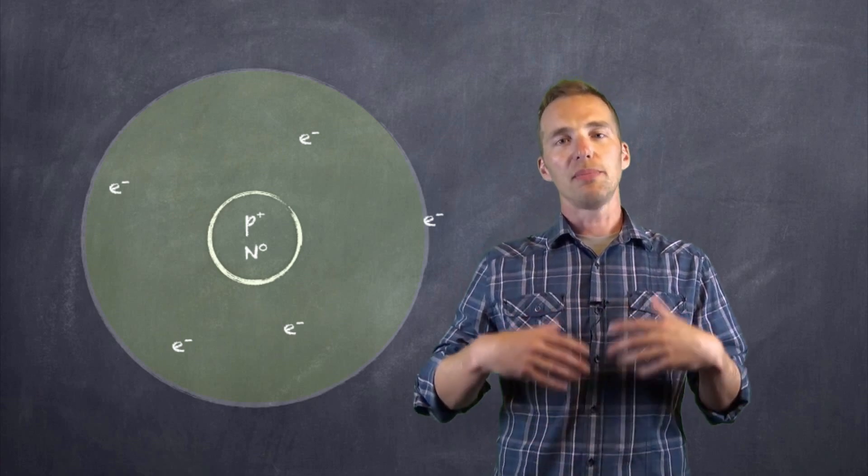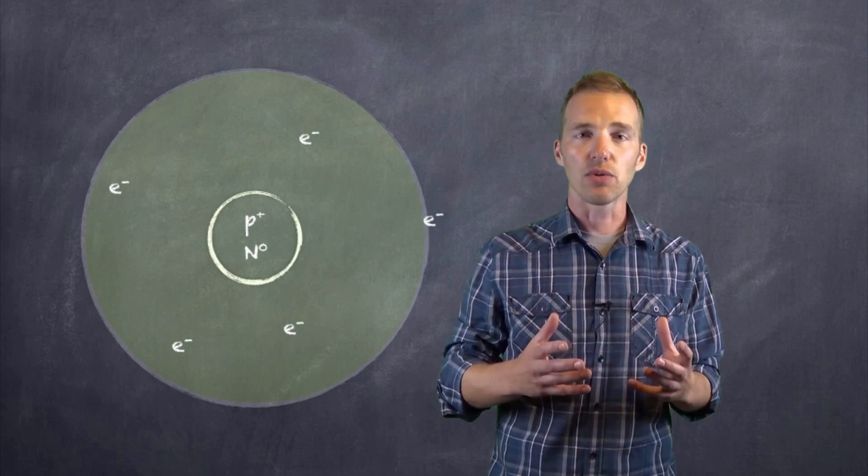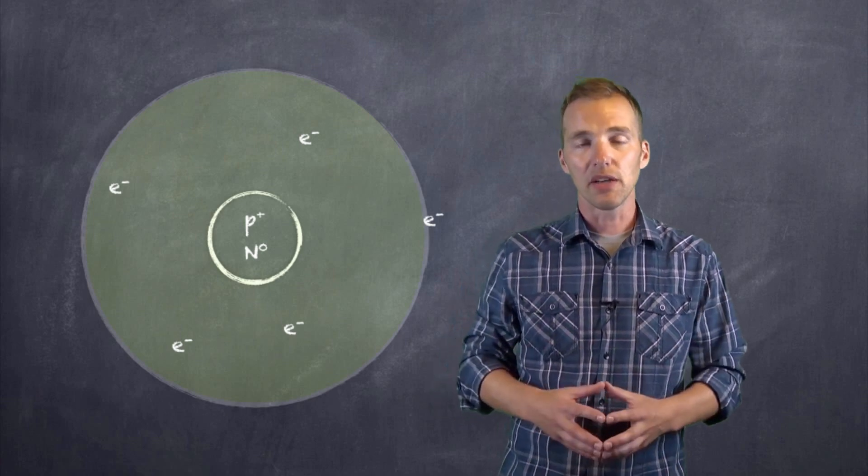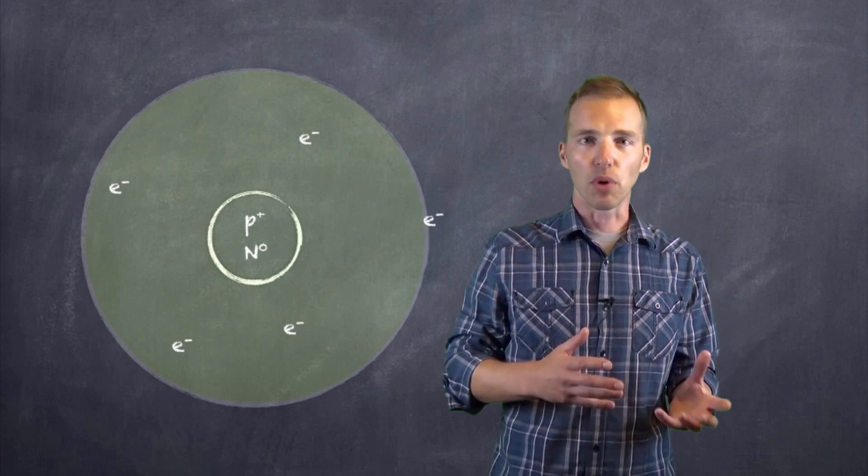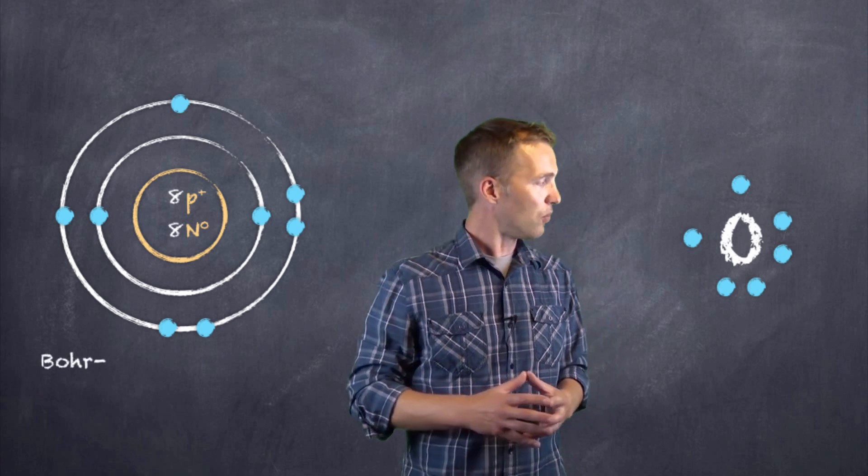But what we want to do is to be able to communicate the number of protons, neutrons, and electrons, because for each element and for each atom, these numbers are going to be different. So how do we communicate the number of protons, neutrons, and electrons in a particular element? Well there are a couple of ways.